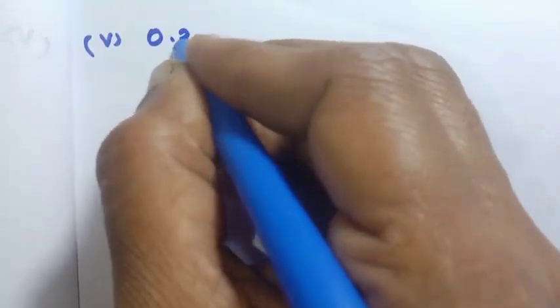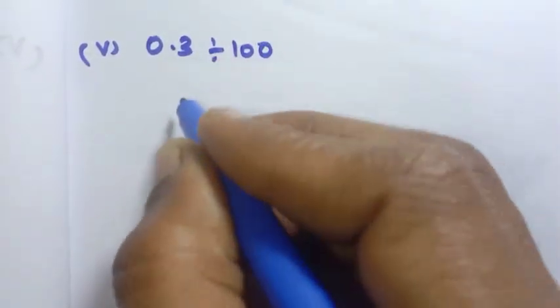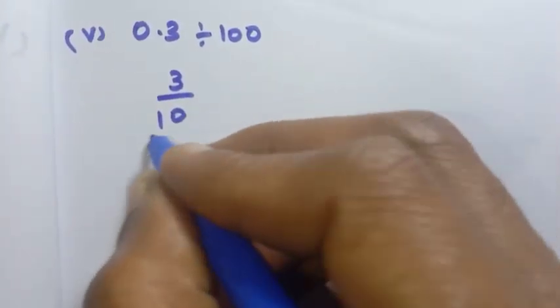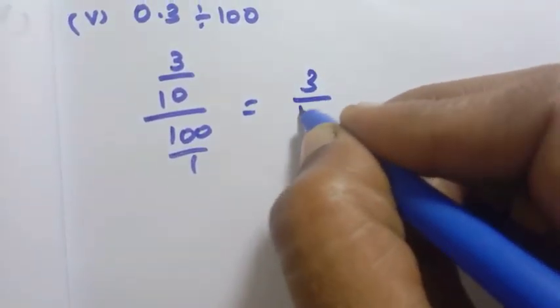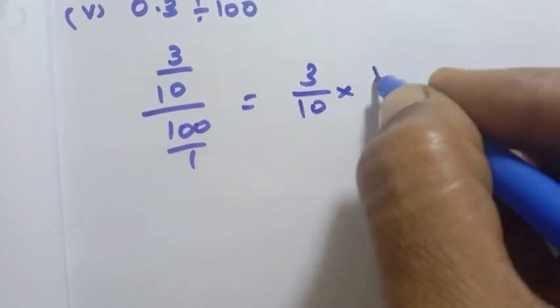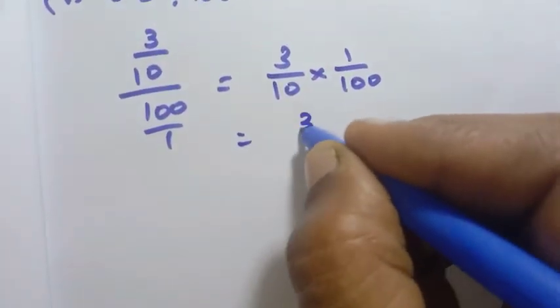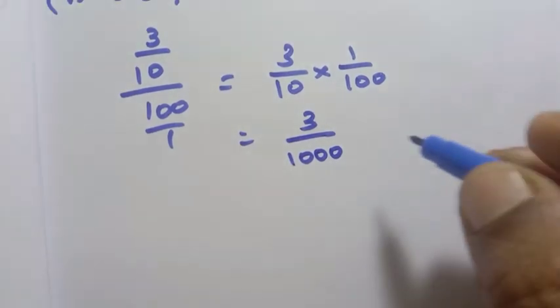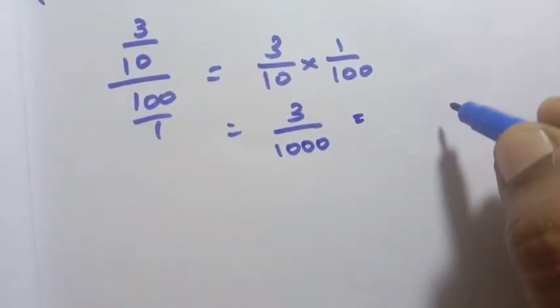Fifth sum: 0.3 divided by 100. We have 0.3 which is 3 by 10. Divided by 100, that is 3 by 10 into 1 by 100, equal to 3 by 1000. So 3 by 1000 gives 3 decimal places.